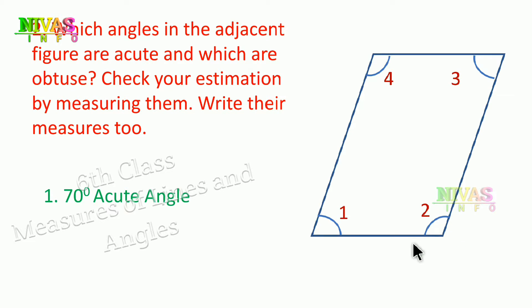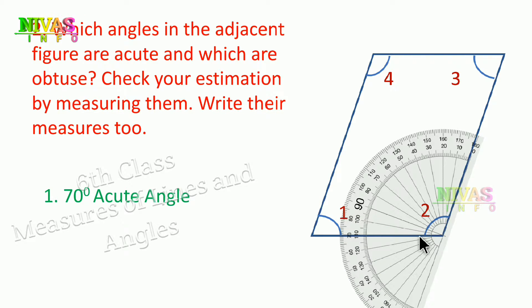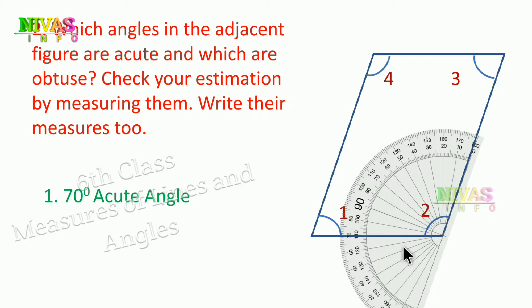When I brought the obtuse angle and used the protractor, it shows 90 degrees on one side. Placing the protractor properly, it reads 110 degrees. So this is an obtuse angle.